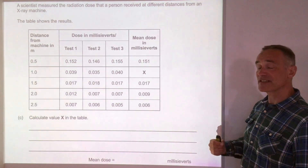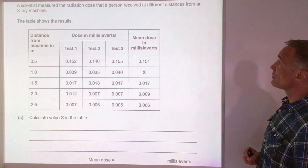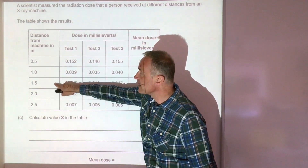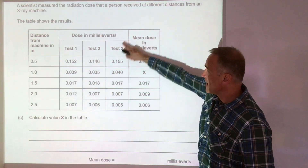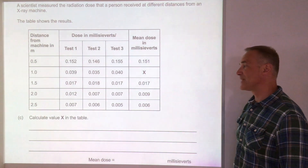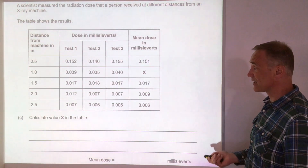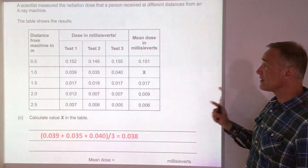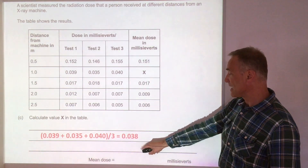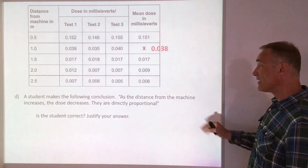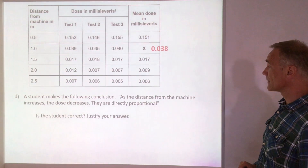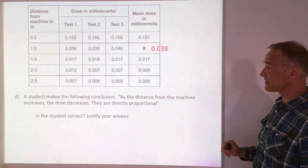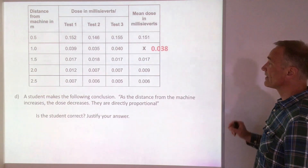This question looks at dosage. A scientist measures the radiation dose a person received at different distances from an x-ray machine. The distance goes up in regular intervals, the dosage is in millisieverts, tested three times then the mean taken. The first question is to calculate the value of x in the table — have a go. You're calculating the mean by adding them up and dividing by three, giving 0.038. The next question: a student concludes that as distance increases the dose decreases and they are directly proportional — is the student correct? Justify your answer.